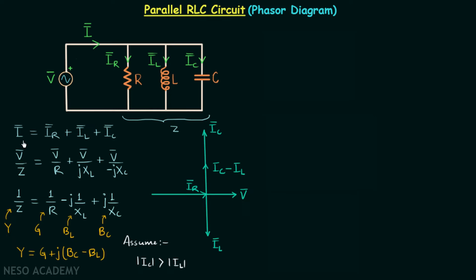I phasor is equal to the vector sum of IR phasor, IL phasor, and IC phasor. The resultant of IL and IC is this vector, so the vector sum of IR phasor and this resultant gives us the net current phasor. The angle between the net current phasor and the net voltage phasor is the power factor angle θ. This is our phasor diagram and triangle.